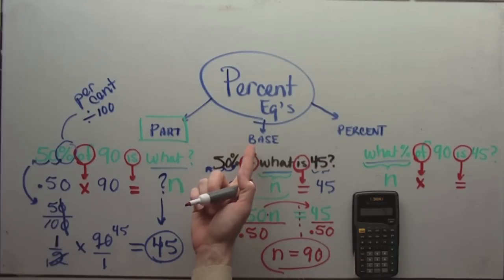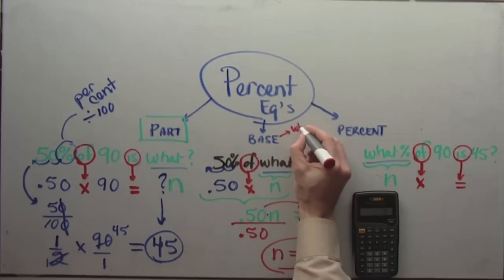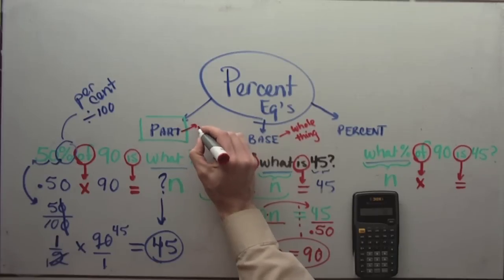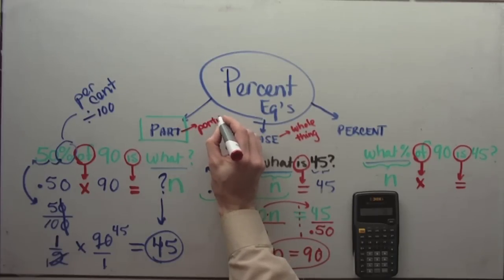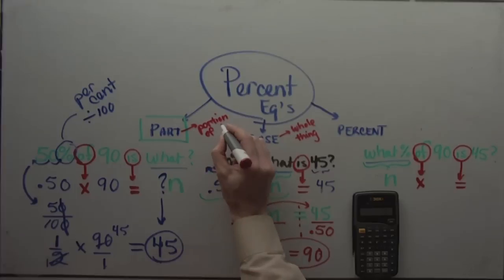The base, that is the original thing that you would start with, the whole thing is the base thing. This is really the whole thing, whereas this part is just a portion of the whole, usually.